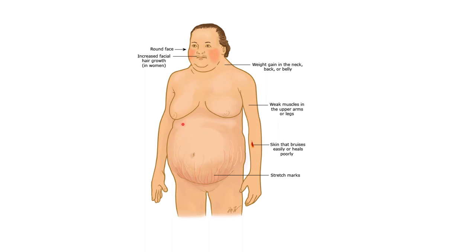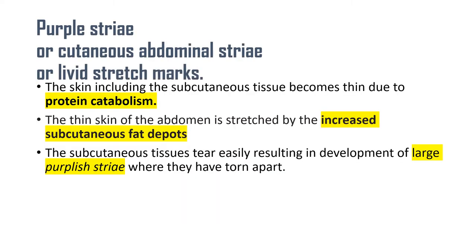Here are the physical manifestations of glucocorticoids' effects on protein and fat metabolism: due to selective fat accumulation in the trunk there is truncal obesity, and due to the proteolytic effect there is thinning of the extremities. This combined effect can also explain the appearance of purple striae. Purple striae in Cushing's syndrome — also known as cutaneous abdominal striae or livid stretch marks — are stretch marks in the abdomen with a purplish color.